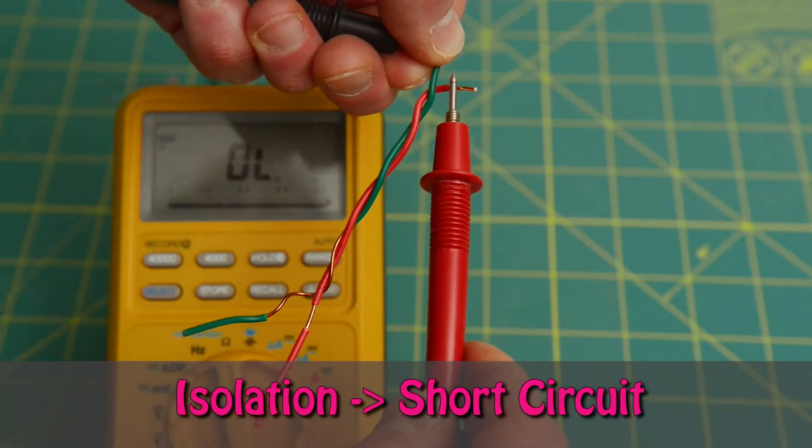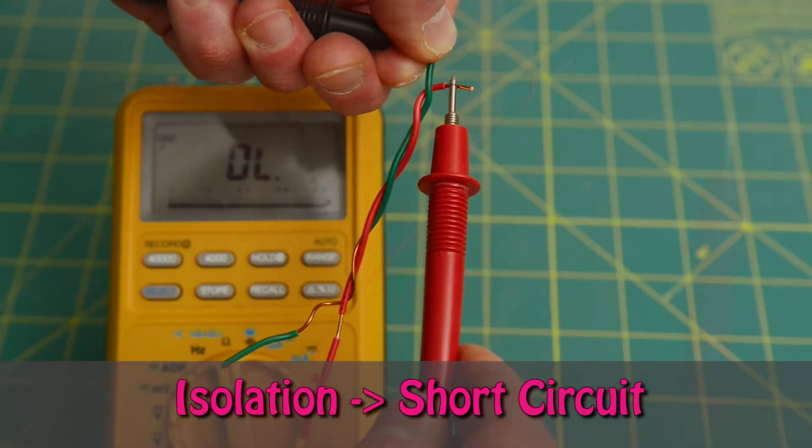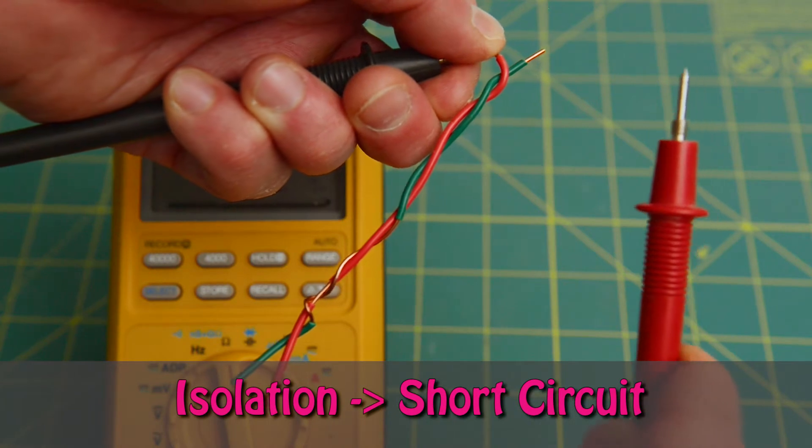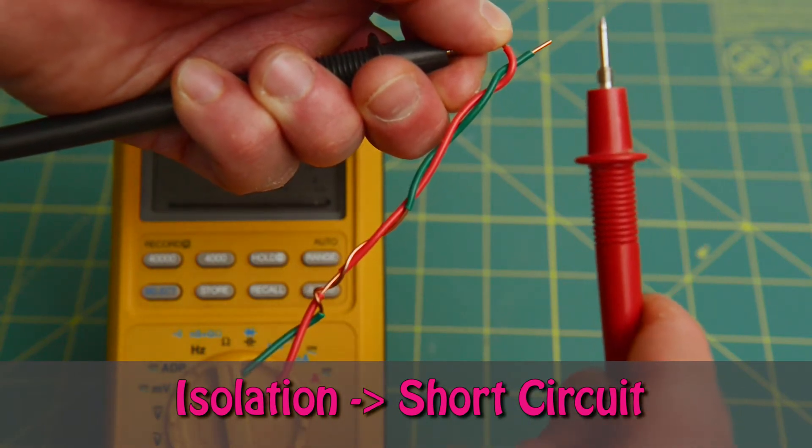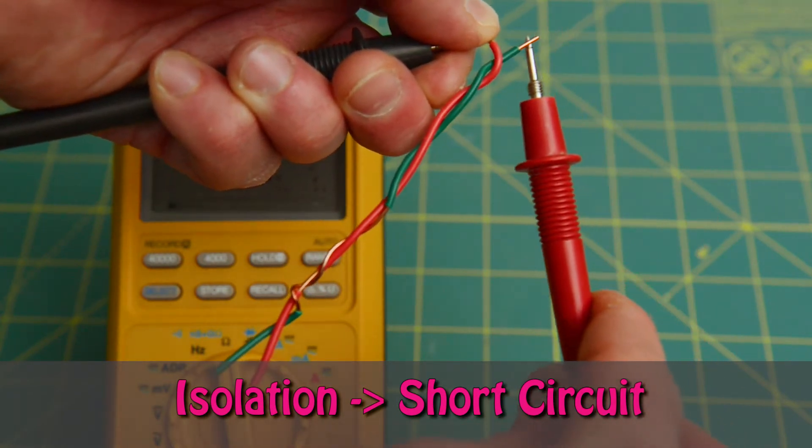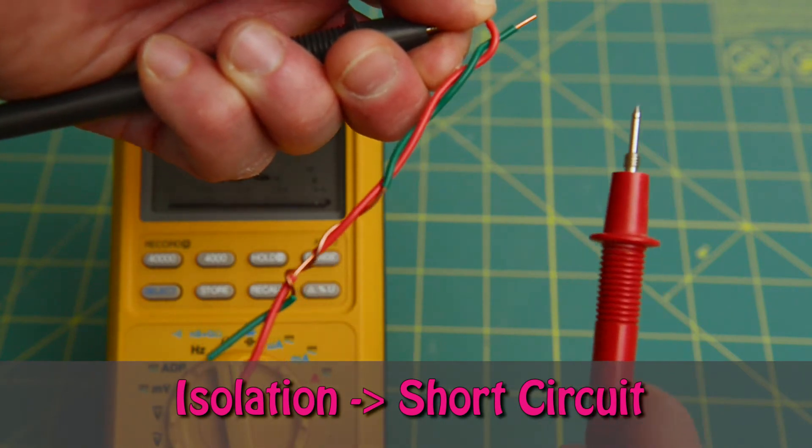You should have no electricity flowing between wires when you have an isolation. Here we have a twisted pair where the insulation has been stripped and the two wires are connected. This would fail an isolation test.